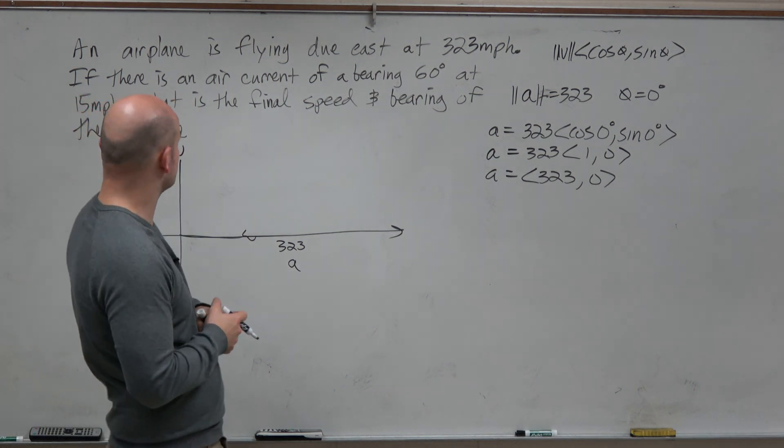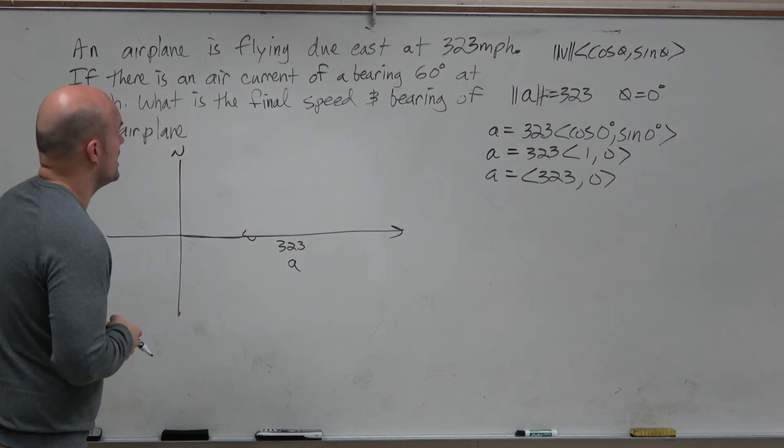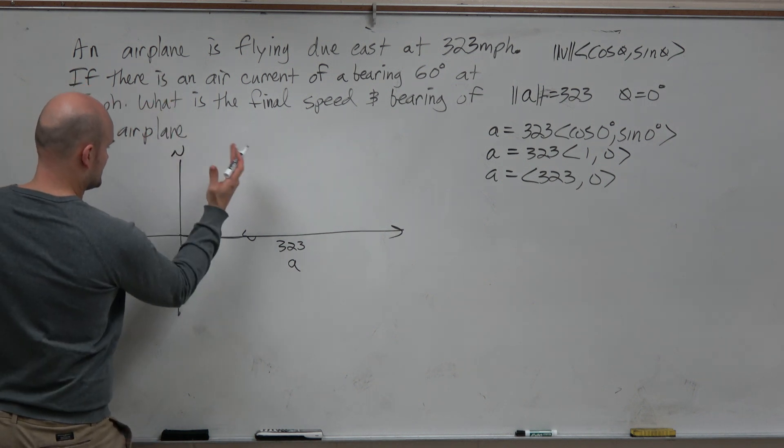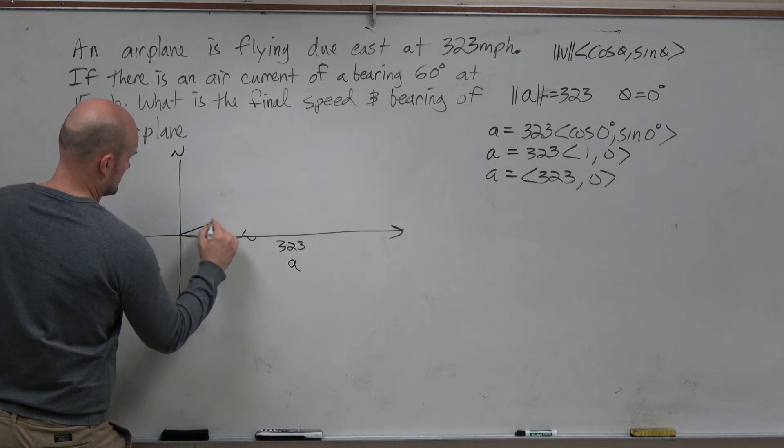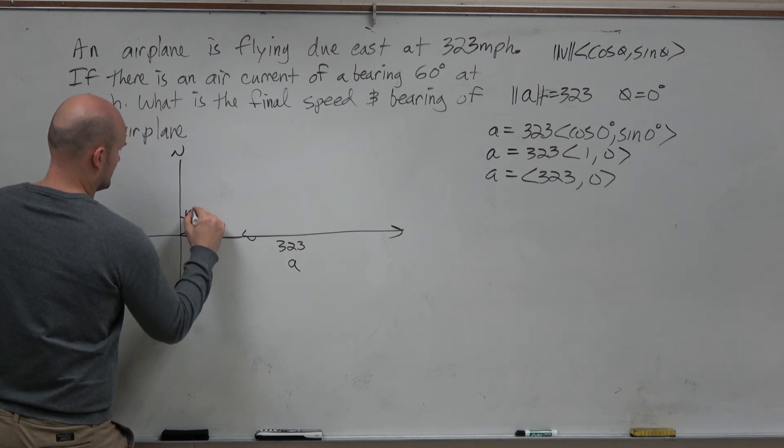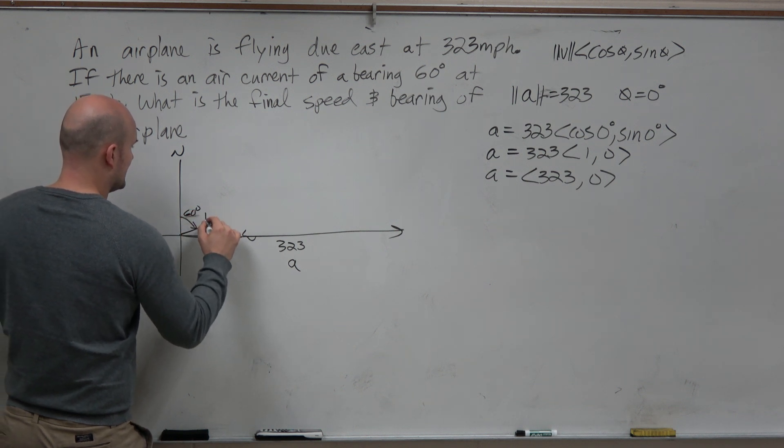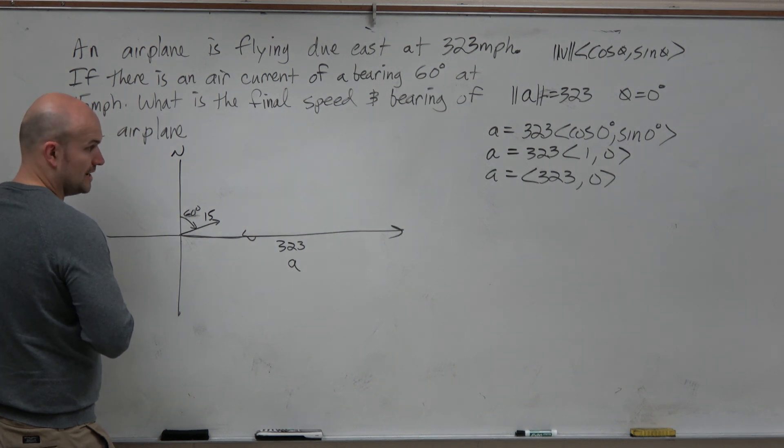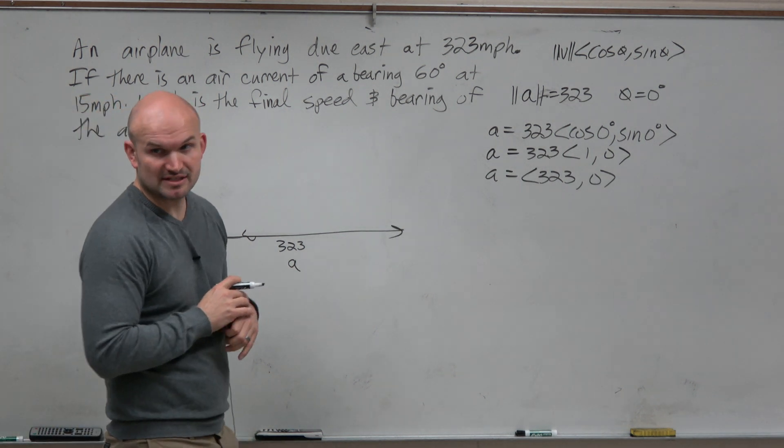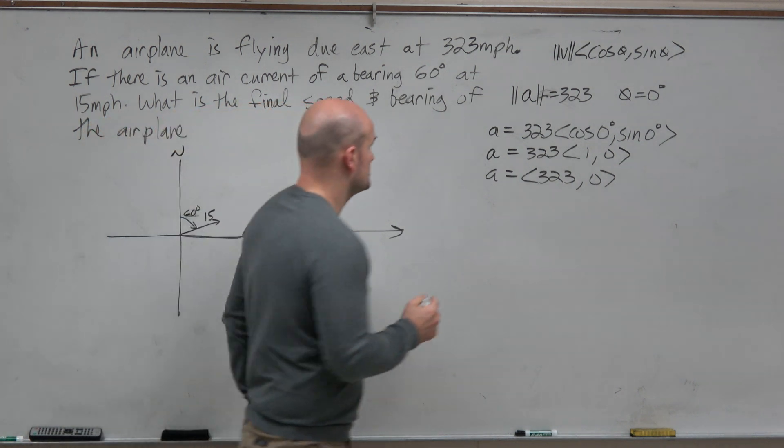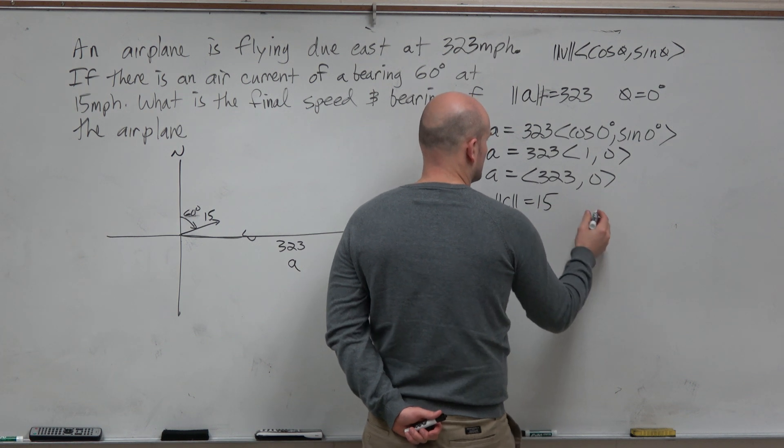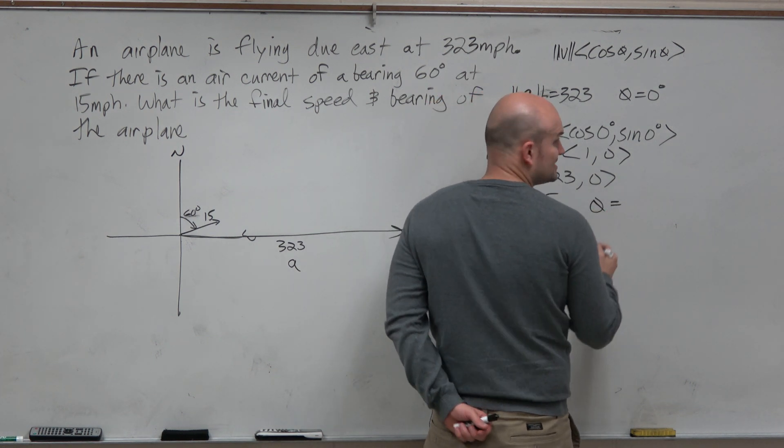Let's work to the next one, our current. So an air current has a bearing of 60 degrees at 15 miles per hour. So we have a bearing of 60 degrees. And then we have a speed here of 15 miles per hour. So can we represent that as a vector as well? Yes. So we can come in and call this C. So let's say the magnitude of our air current is going to be 15.